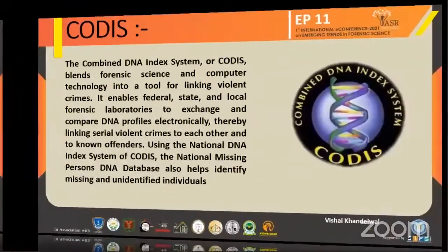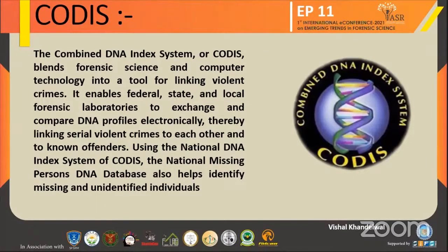In forensic genealogy, we use CODIS — the Combined DNA Index System. Forensic science uses this technology as a tool for linking violent crimes. It enables federal, state, and local forensic laboratories to exchange and compare DNA profiles electronically, thereby linking serial violent crimes to each other and to known offenders. Using the national DNA index system of CODIS, the national missing persons' DNA database also identifies missing and unidentified individuals. In CODIS, profiles are matched with thirteen specific locations, called STRs.